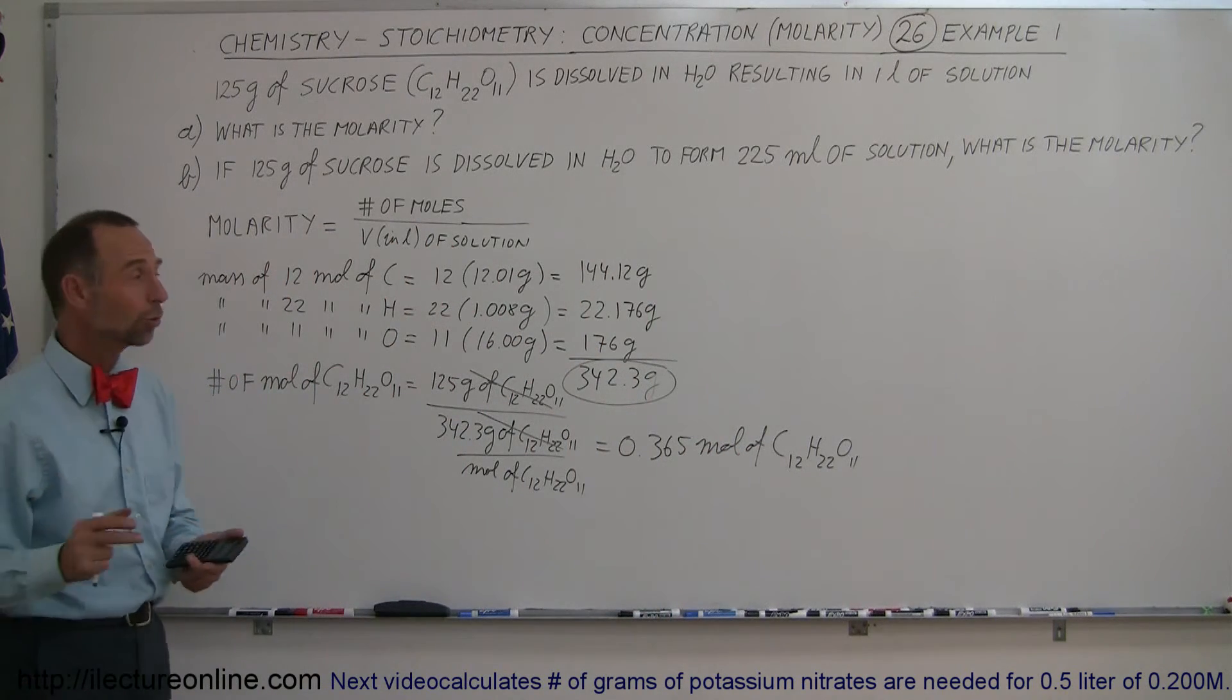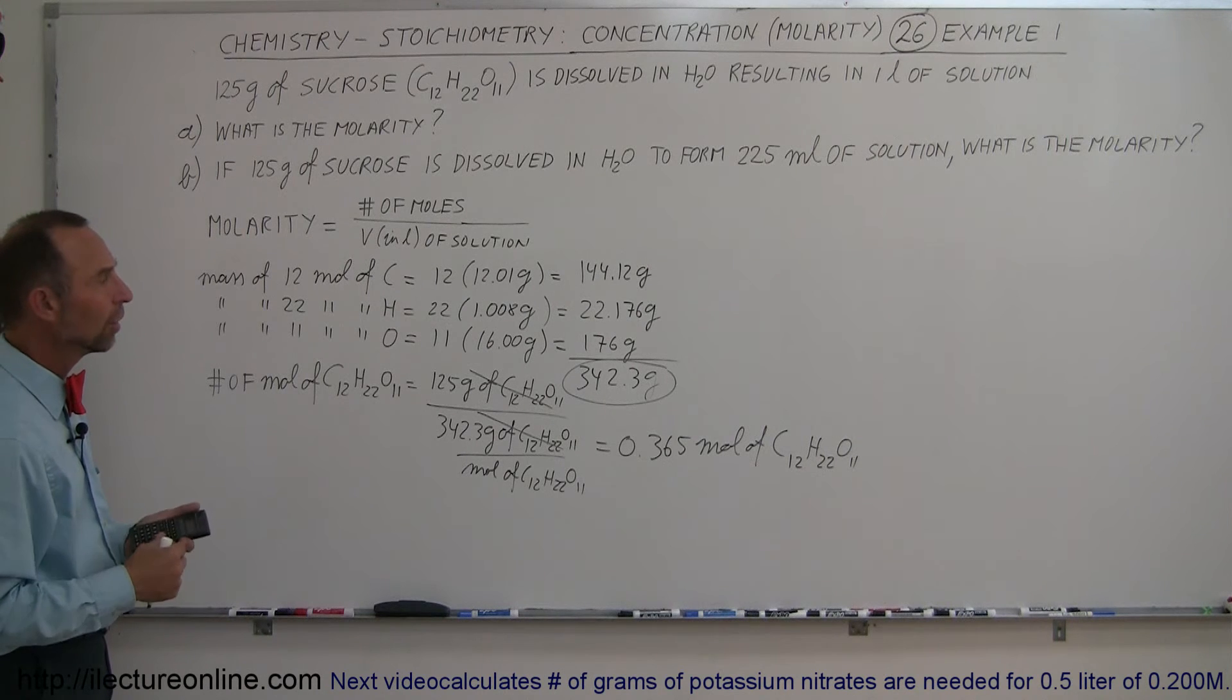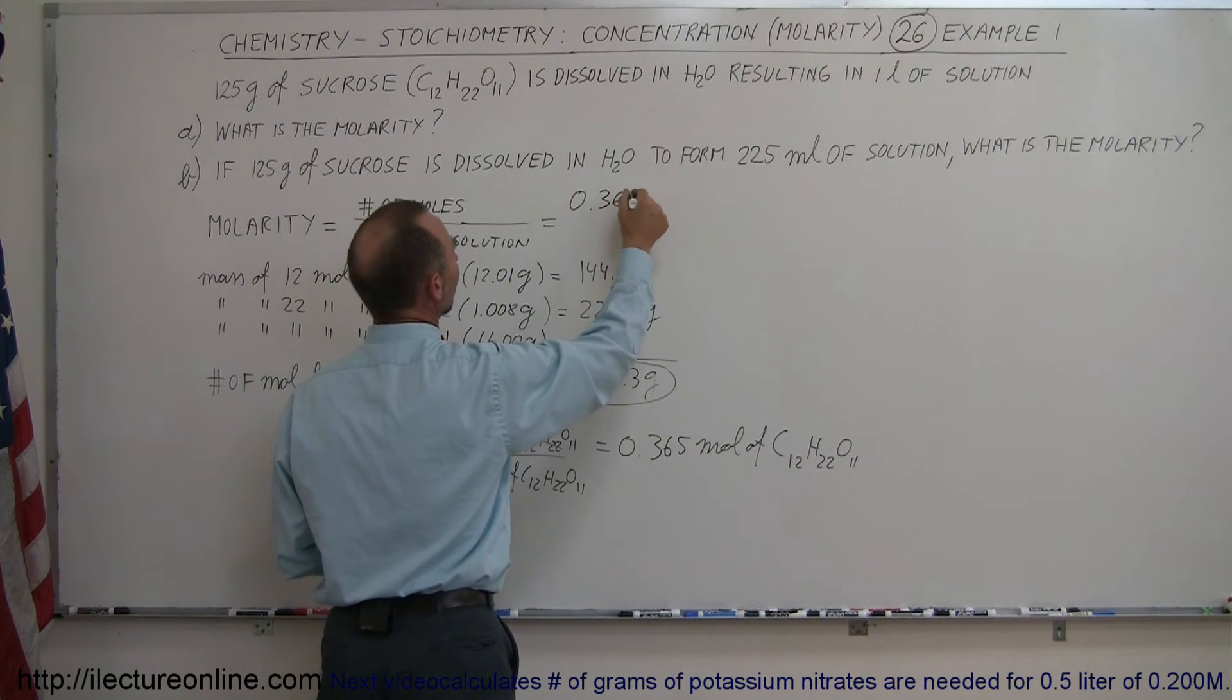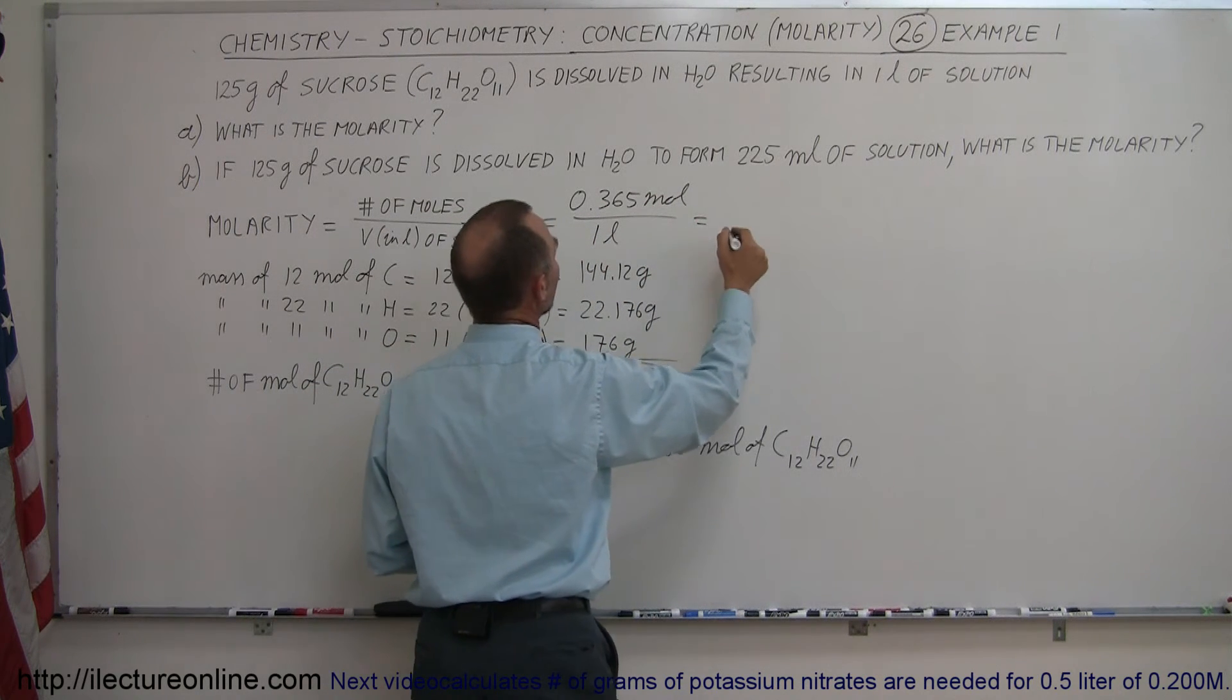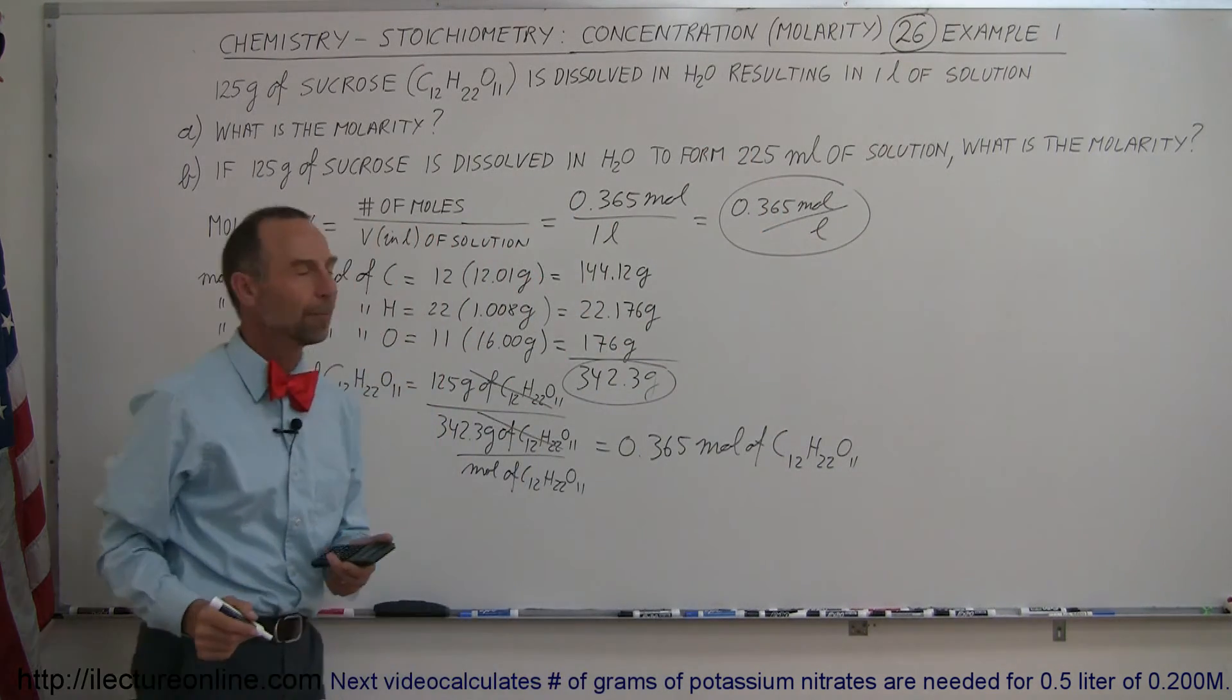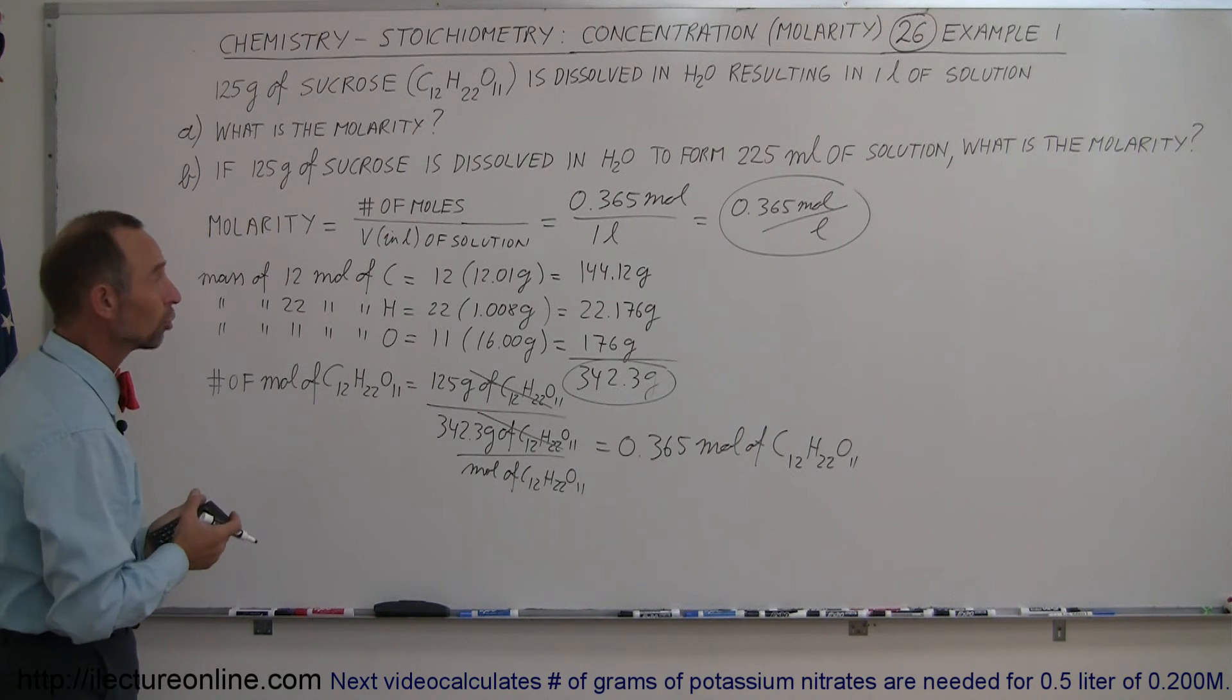All right, so now we know the number of moles of sucrose that we have, and that we end up dissolving in the water, so we end up with 1 liter of solution. So now the molarity is going to be the number of moles divided by the volume, so this is equal to 0.365 moles, divided by 1 liter of solution, and so the molarity is 0.365 moles per liter, and there you go, that's how you write it. Okay, that's the concentration or the molarity, number of moles per liter of solution.